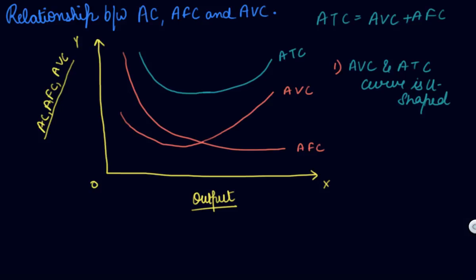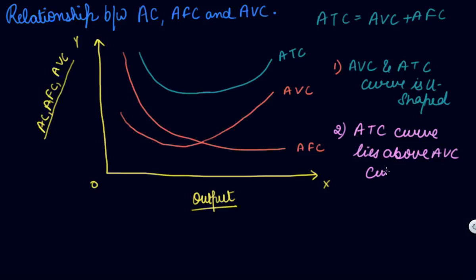Number two: the ATC curve lies above the AVC curve. Your average total cost curve lies above your average variable cost curve because your average total cost curve includes the average fixed cost.